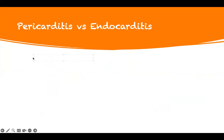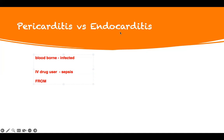Endocarditis — the inside lining. Mostly bloodborne diseases bring it and you get infected. Sometimes when they give you a case, it may be an IV drug user — somebody who shoots drugs. They get a staph infection that gets into their blood, they develop sepsis, and then they develop endocarditis.